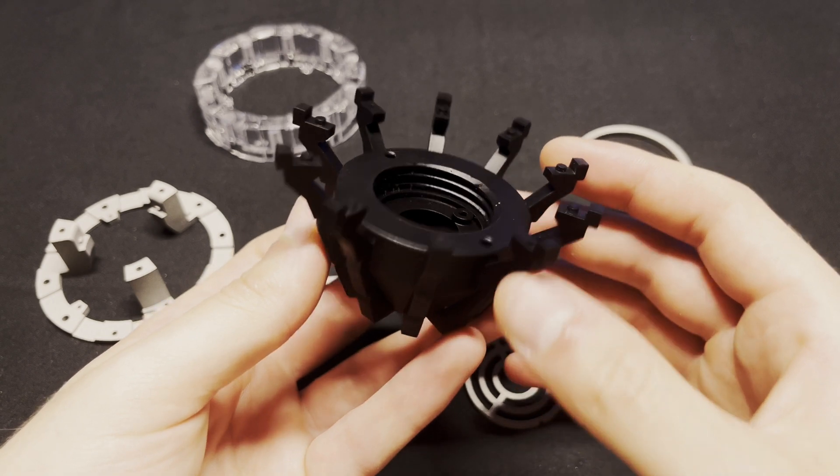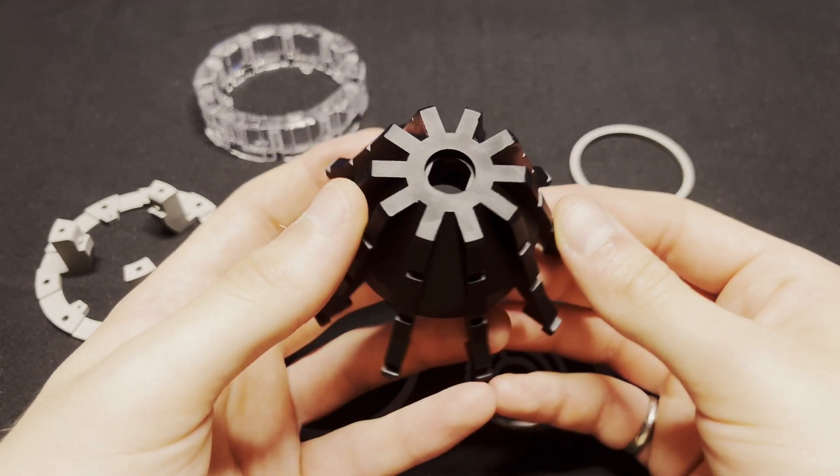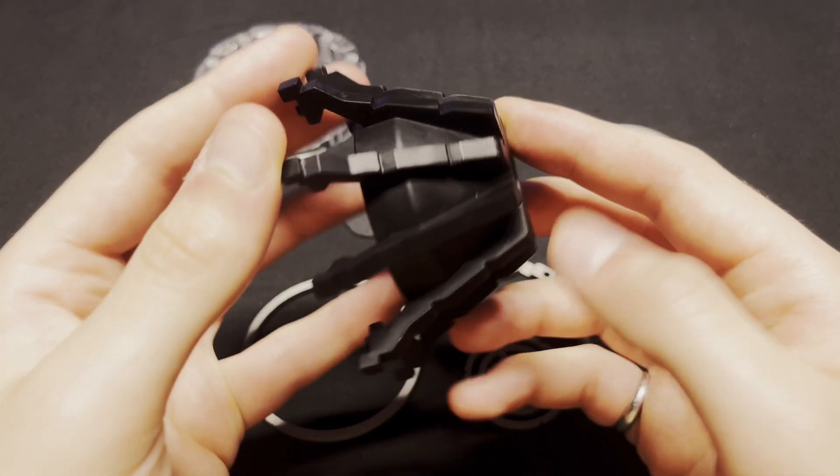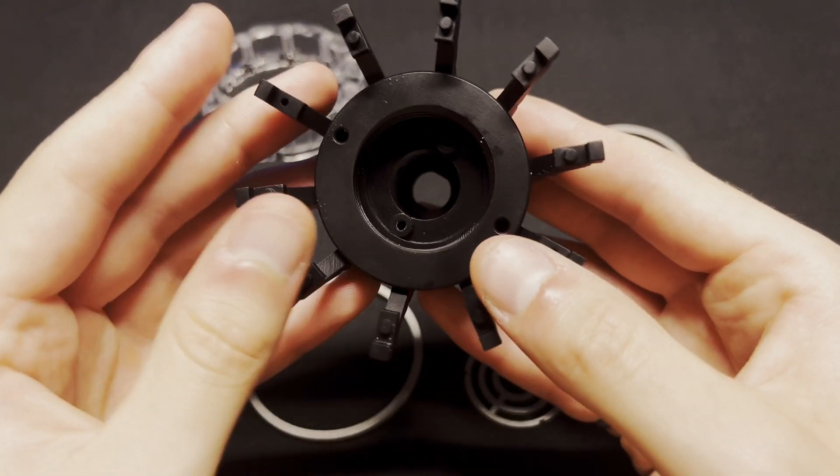I decided to print the main housing of the arc reactor in black resin because it not only helped reduce cost but will also help reduce the overall weight of the finished product.